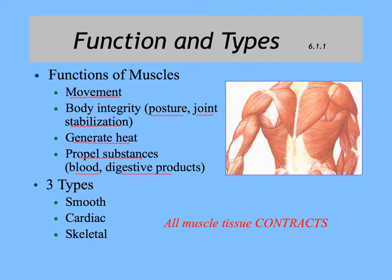If you remember from our discussion of tissues, there are three types of muscles: smooth muscle, cardiac muscle, and skeletal muscle. Most of this unit will focus on skeletal muscle. All types of muscle tissue, whether smooth, cardiac, or skeletal, will contract. They have contractile fibers inside the cells that are able to slide and shorten the cell and contract muscle tissue.